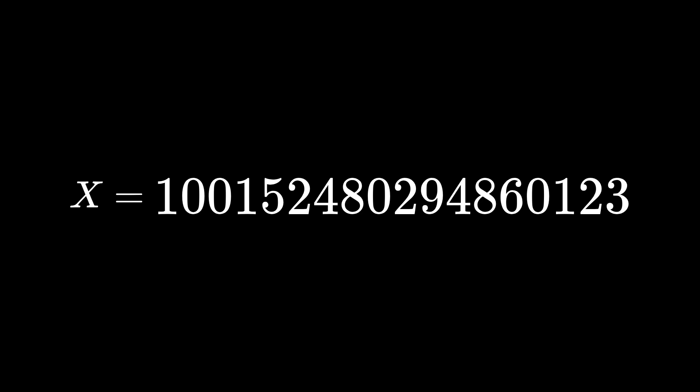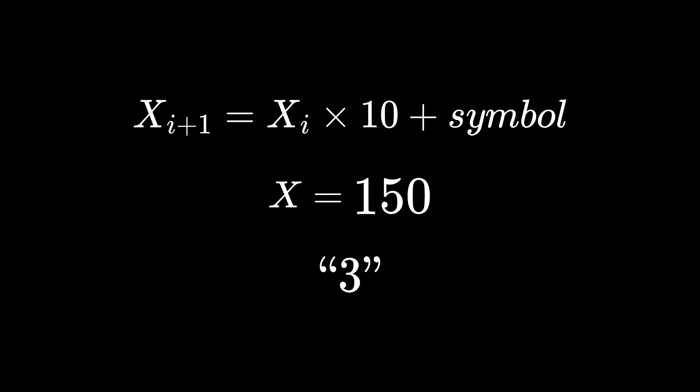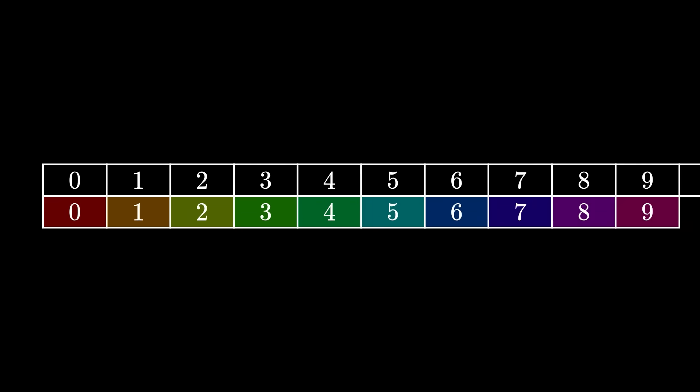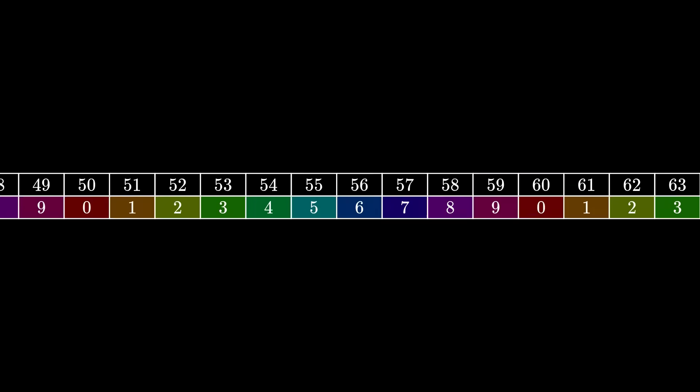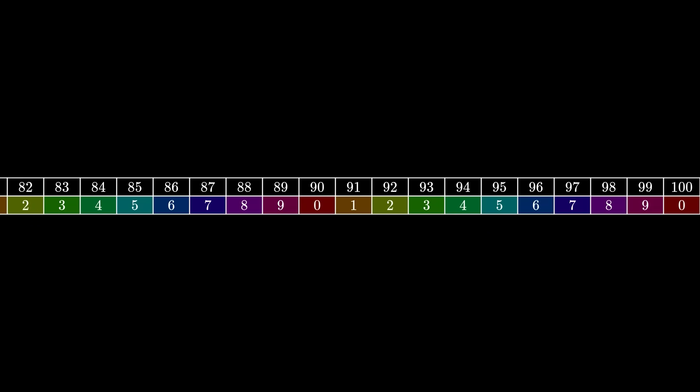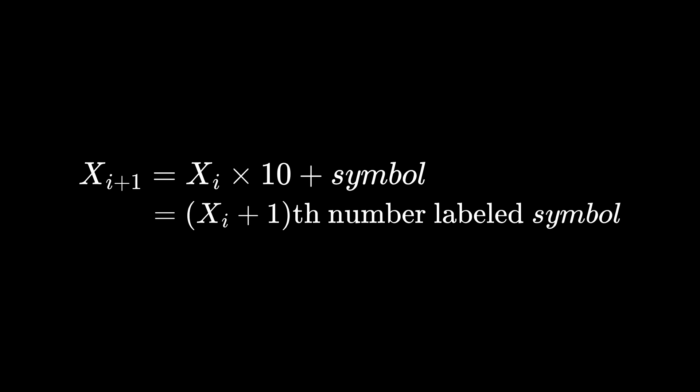x starts out with an initial value of that extra digit. Then, to encode a symbol, you multiply x by 10 and add its symbol index. So to encode a 3, multiply by 10 and add 3. Now, what we're going to do is label the natural numbers with their final digit. So, single digit numbers are labeled themselves, 15 is labeled 5, and 100 is labeled 0.